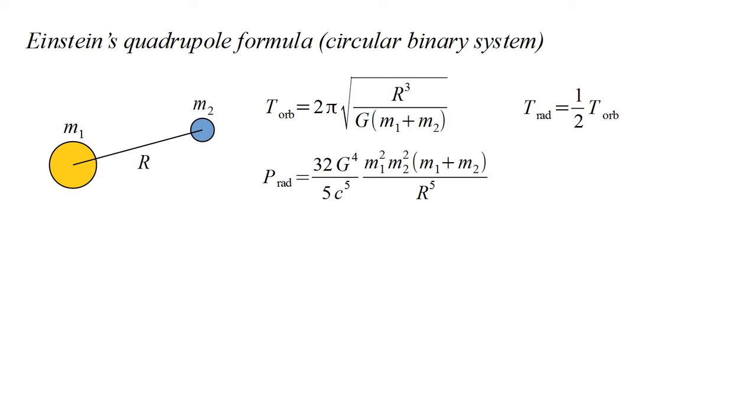The power carried away by gravitational radiation is a constant times the product of the masses squared times the sum of masses over the fifth power of the separation. The predicted gravitational wave amplitude is a constant times the product of the masses over the separation times the distance between the masses and the observer.